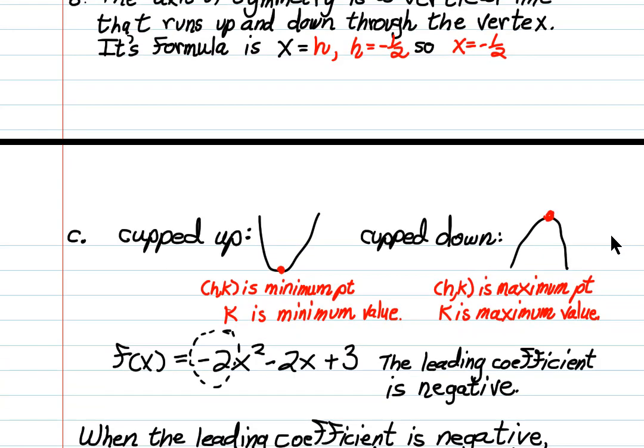Now in part c we're being asked to find the maximum or the minimum. When we have a cupped up parabola, the vertex is the lowest point, so it's a minimum point, and k is the minimum value. When we have a cupped down parabola, the vertex is the highest point, so it's a maximum point, and k is the maximum value.